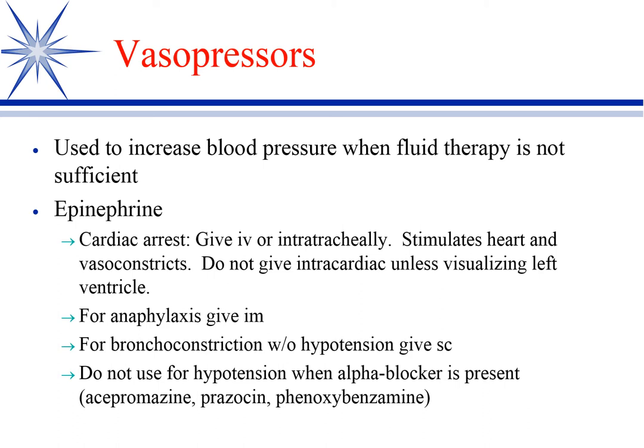When you get a hypotensive animal, we do a three-step approach. We've got fluids, we've got inotropes — mostly dobutamine — and then we've got vasopressors, which are vasoconstrictors in actuality. So if they're hypovolemic, we'll volume load them. We want to make sure they have plenty of fluid so that they can vasoregulate and raise their blood pressure.